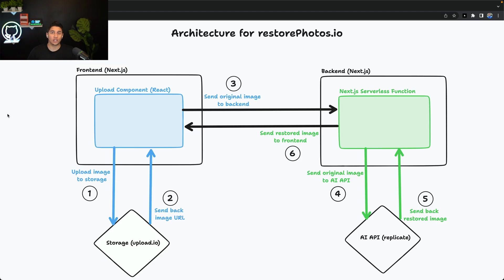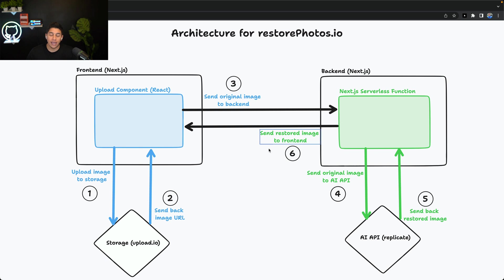Let's look at the architecture for this project. We have four main components: our front-end, which is in Next.js and is primarily composed of our upload component and some image components; our back-end, which is a Next.js serverless function; and two external services — one for storage and one for our AI API.